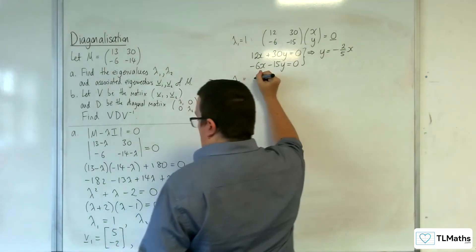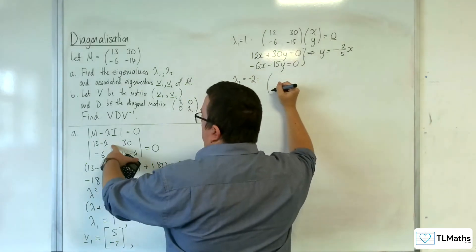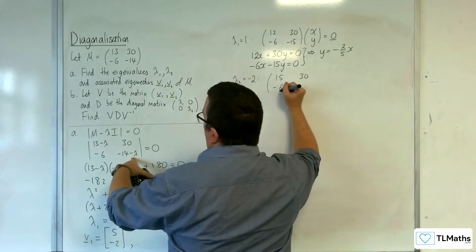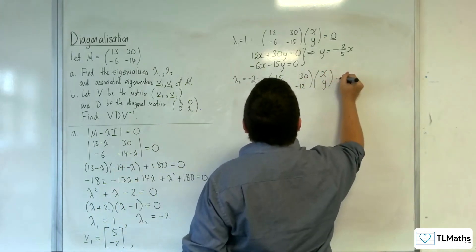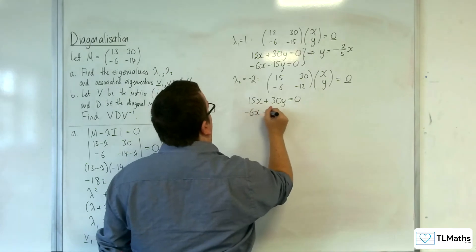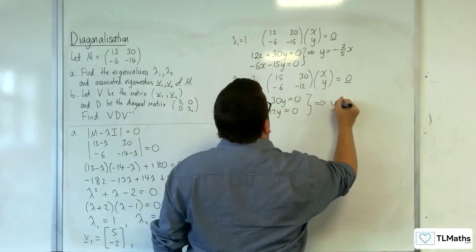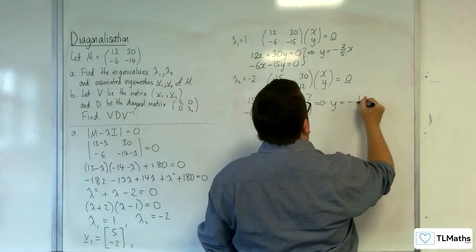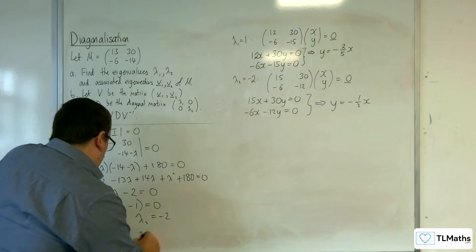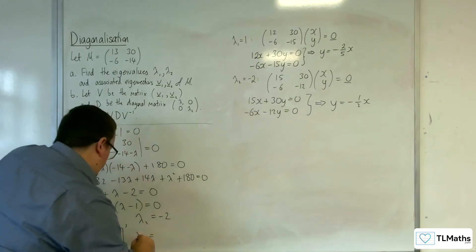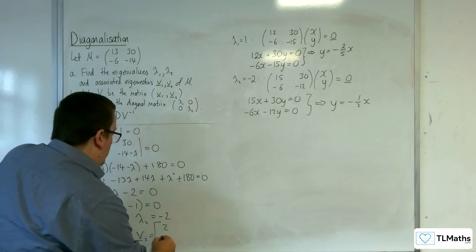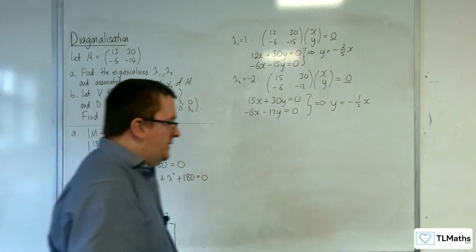For lambda 2 equals minus 2, we have the matrix 15, 30, minus 6, minus 12. So 15x plus 30y equals 0 and minus 6x minus 12y equals 0. This gives y equals minus 1/2 x, so putting x equals 2, y equals minus 1, giving v2 as the vector (2, minus 1).